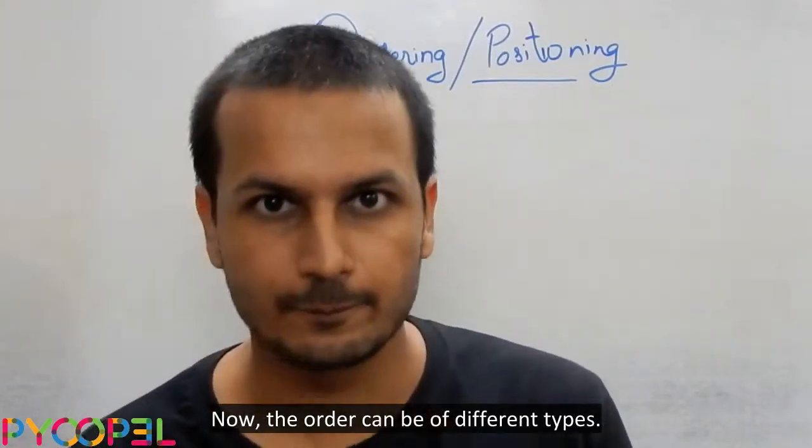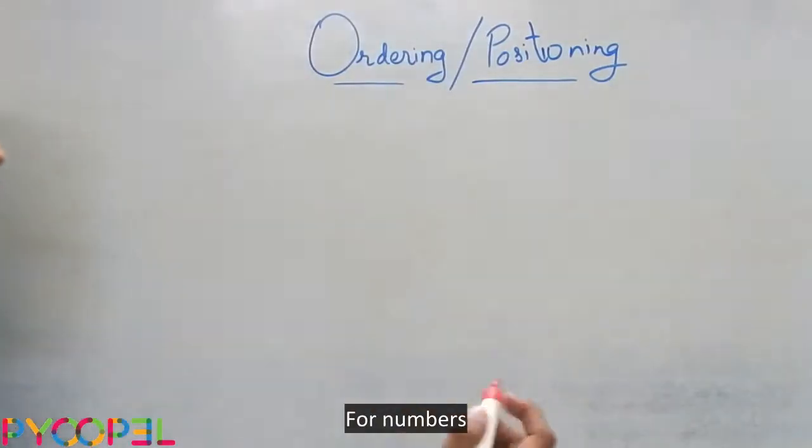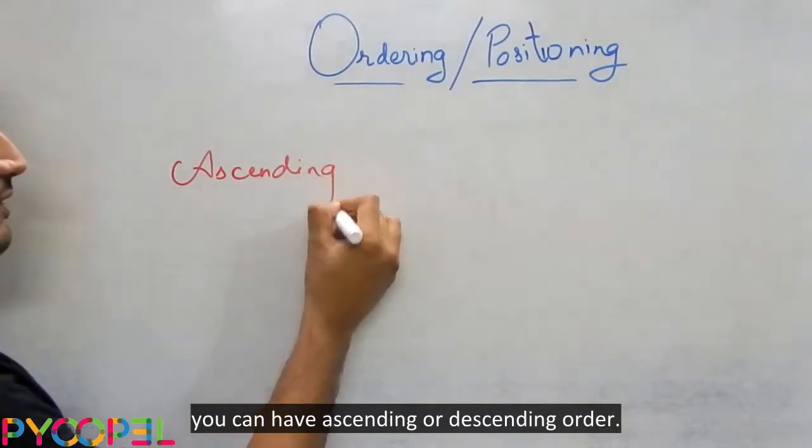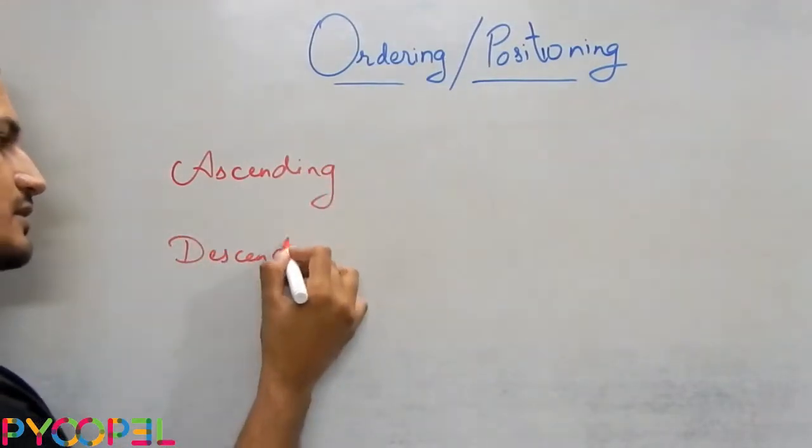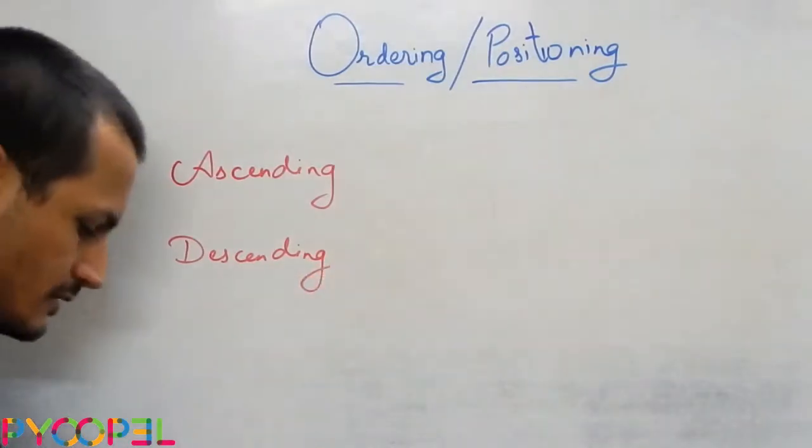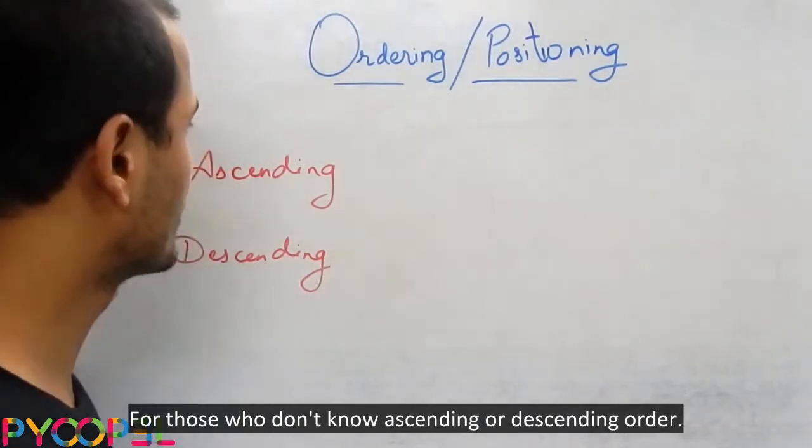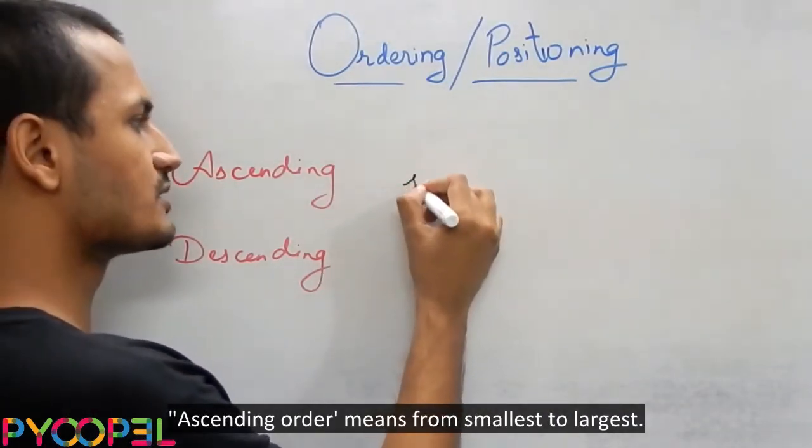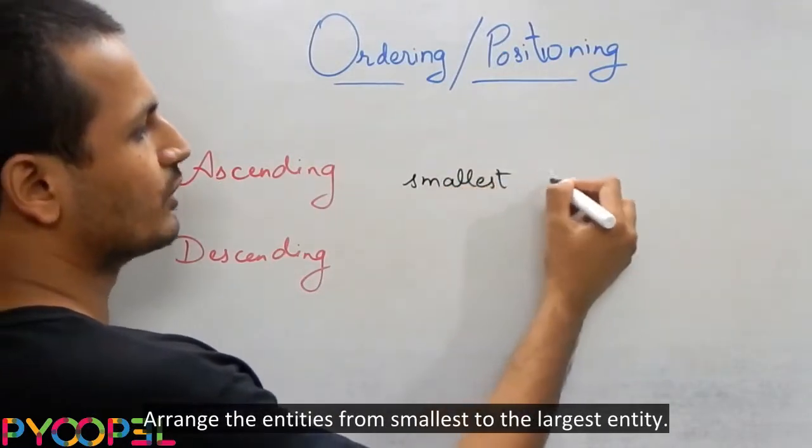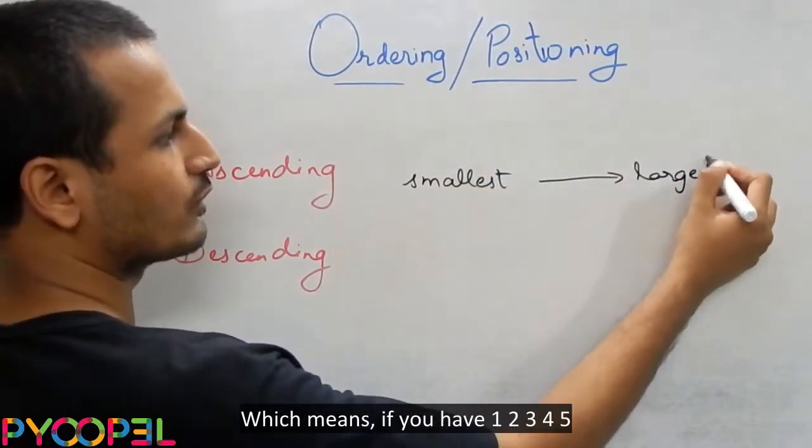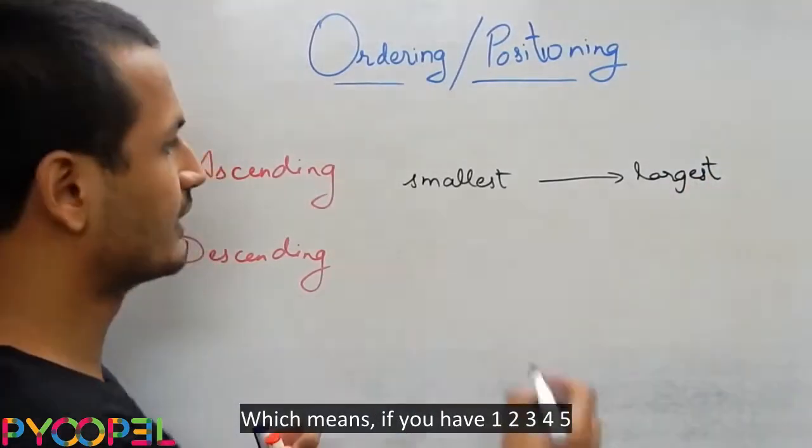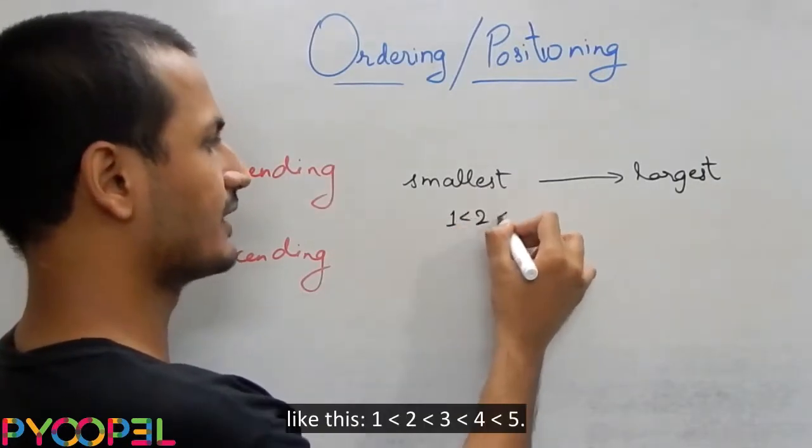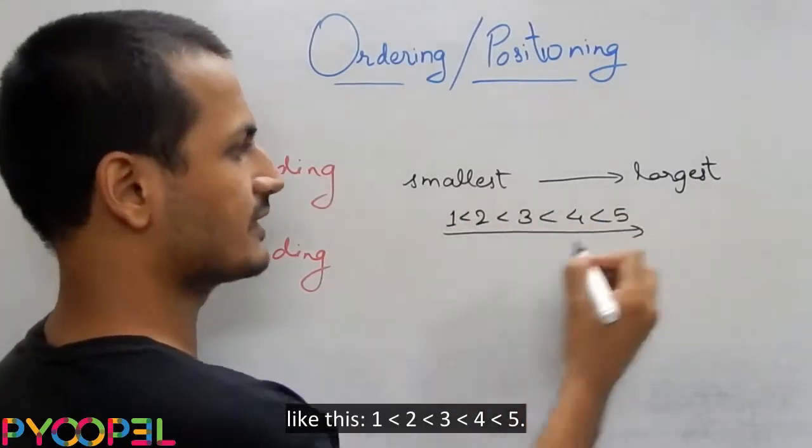Now the order can be of different types. For numbers you can have ascending or descending order. For those who don't know ascending or descending order, ascending order means from smallest to largest. Arrange the entities from smallest to the largest entity, which means if you have 1, 2, 3, 4, 5, then ascending order is something like this. This is the ascending order.